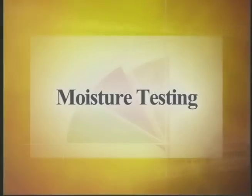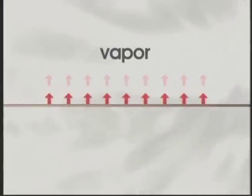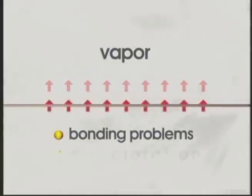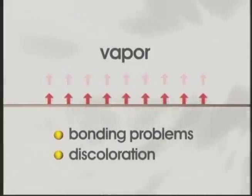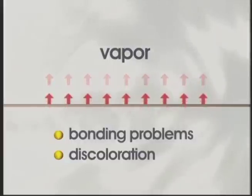Moisture testing. The next step is to perform a moisture test. Concrete slabs emit some degree of moisture in the form of vapor. These vapors could lead to bonding problems or discoloration and must be identified prior to installation.